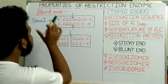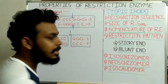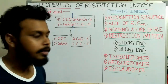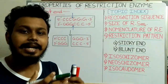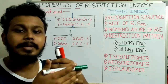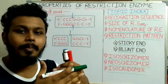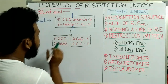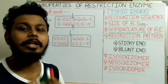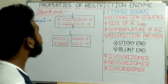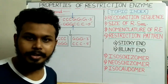Remember that blunt-ended cuts require more energy than sticky-ended cuts to rejoin or recombine. In a sticky-ended cut, a single-stranded overhang is produced that can complementary base pair with the other strand, allowing easy recombination. In blunt-ended cuts, there is no overhang, so more energy is required to rejoin. These are the two restriction patterns: sticky end and blunt end.